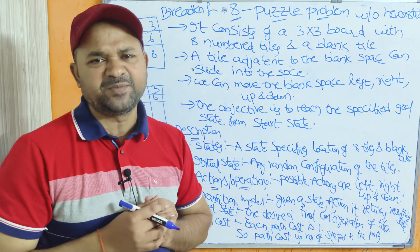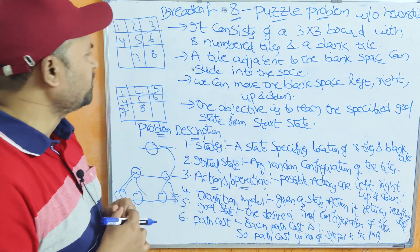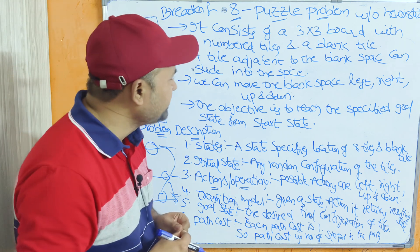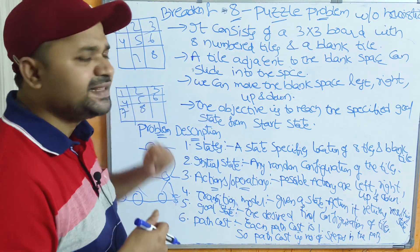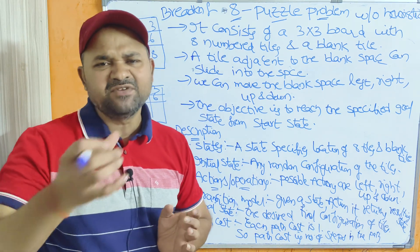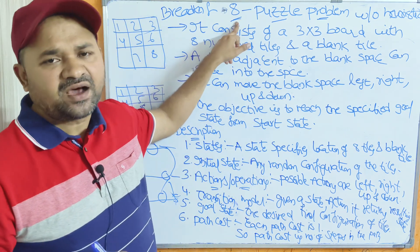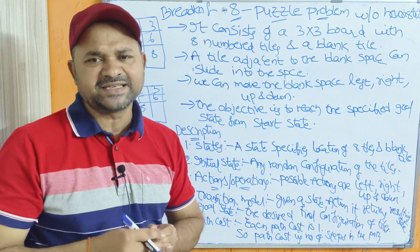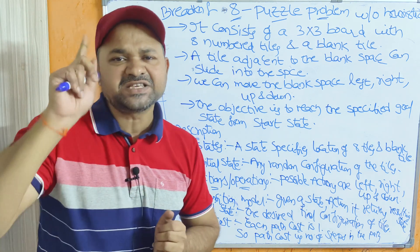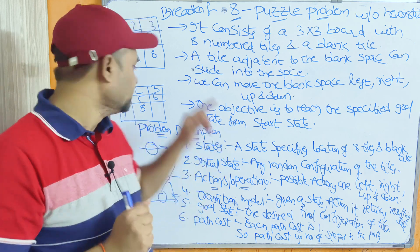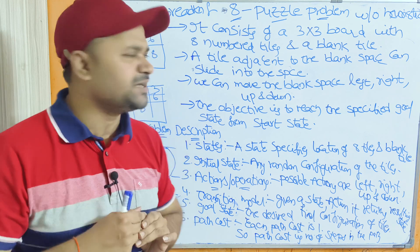Now let us see what the 8-puzzle problem is. It consists of a 3×3 board with 8 numbered tiles and a blank tile. That means totally we will have 9 squares. Out of 9 squares, 8 squares are numbered — that is why we call it 8 numbered tiles. The remaining 1 tile is blank. That is what the 8-puzzle problem is.